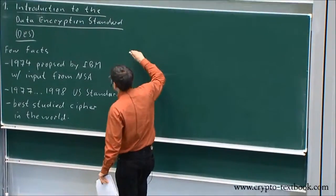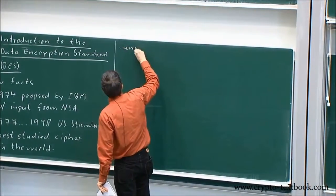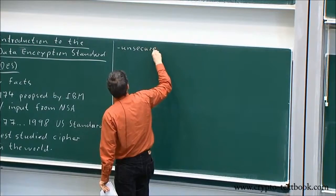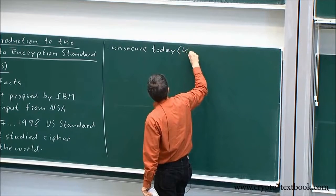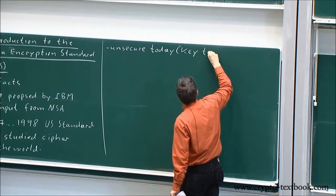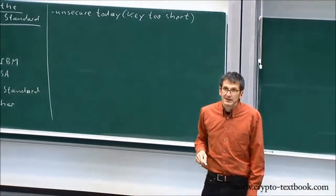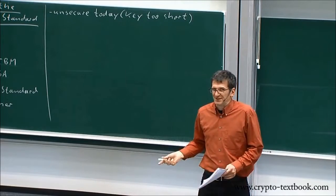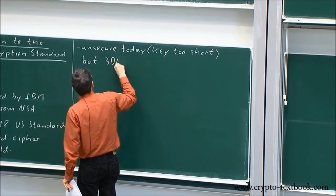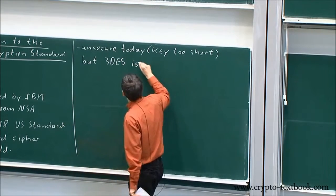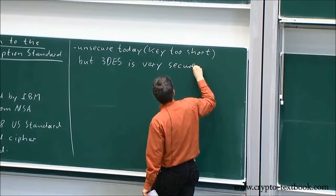The question is, maybe to follow up here, normal DES is unsecured today. The key is too short. So the question is, why is that on the German passport? But triple DES is very secure.